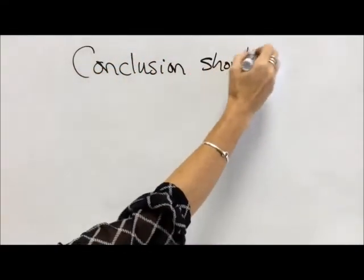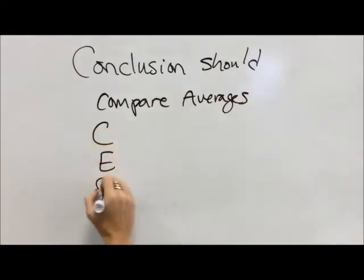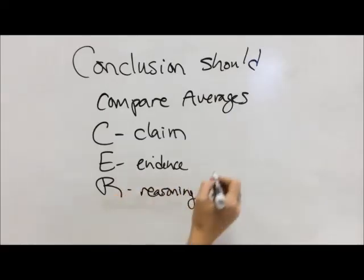Then the conclusion needs to compare your averages. That's the evidence part. The claim is what happened, the evidence is the comparing of averages, and the reasoning is why do you think that happened.